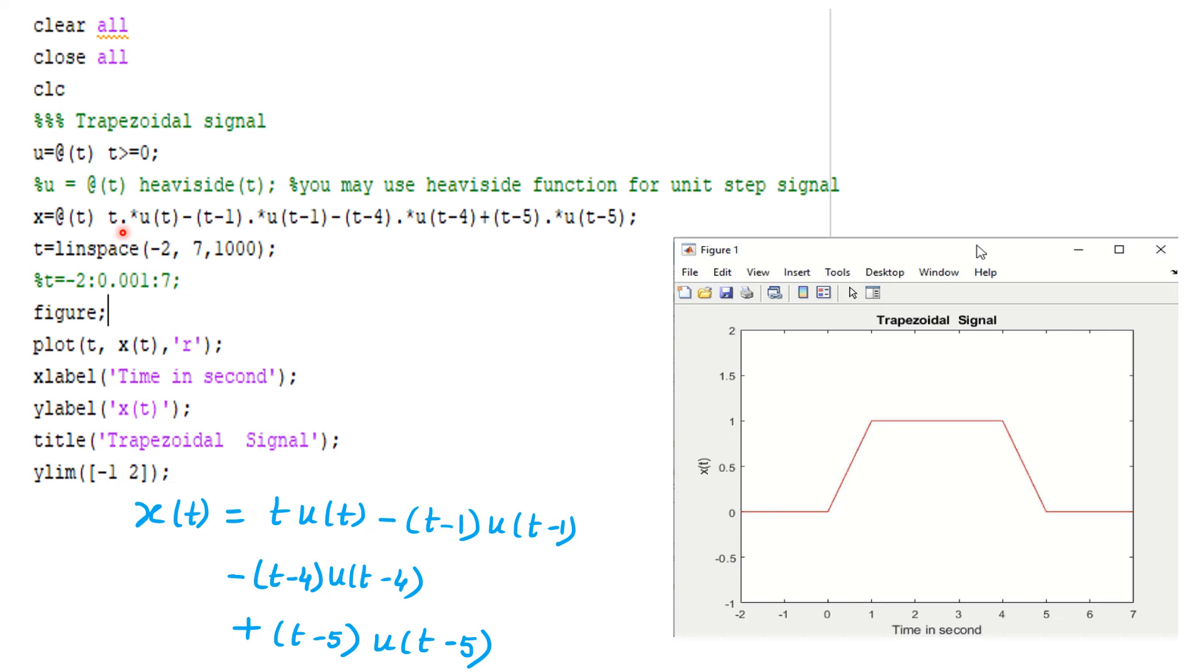So remember t will be our vector, so I will put dot star. So this is one vector, this is another vector, so element wise multiplication. Then second component we can write it minus (t-1) .* u(t-1), likewise that one, and fourth component.